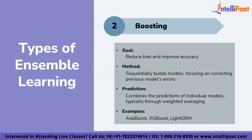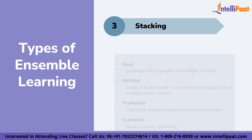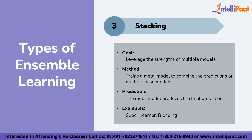The second type is boosting. In this method, models are sequentially built, focusing on correcting previous models' errors. Predictions are combined typically through weighted averaging. The goal is to reduce bias and improve accuracy. AdaBoost, XGBoost, and LightGBM are some examples of boosting.